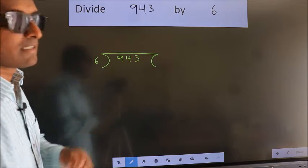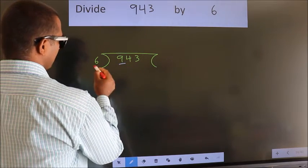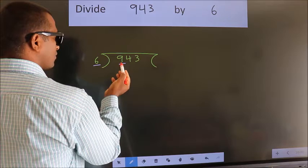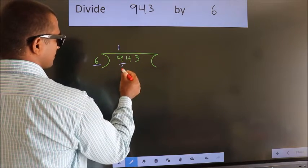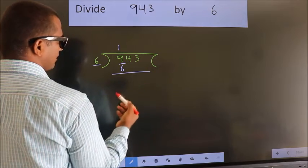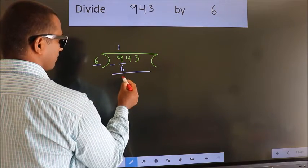Next, here we have 9, here 6. A number close to 9 in the 6 table is 6 times 1 is 6. Now we should subtract. We get 3.